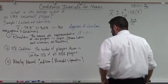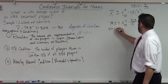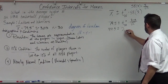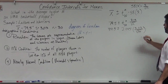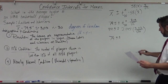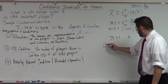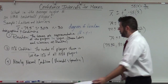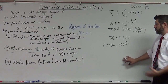We have our t-star now, so I'm going to put it in. It's 79.5 plus or minus 2.045 times 3.03 over the square root of 30. That gives us 79.5 plus or minus 1.13, which gives us an interval of 78.37 to 80.63. We've computed our confidence interval, and now we do our conclusion.